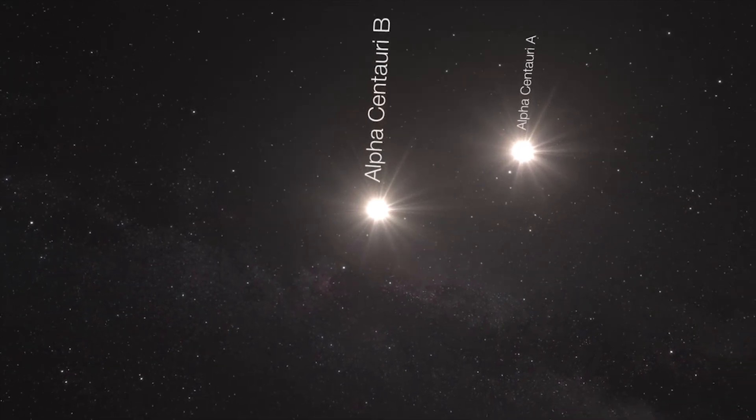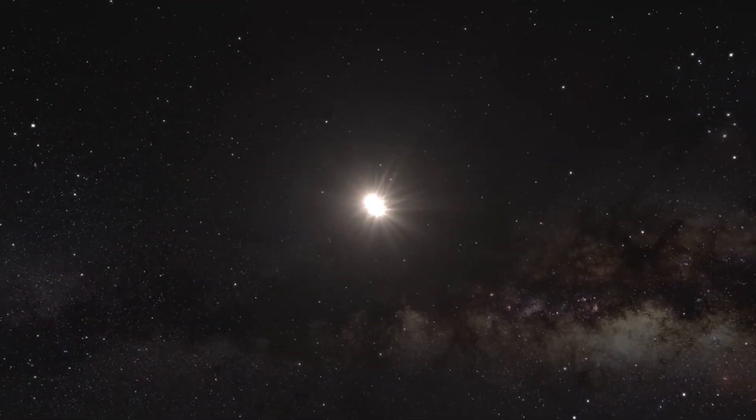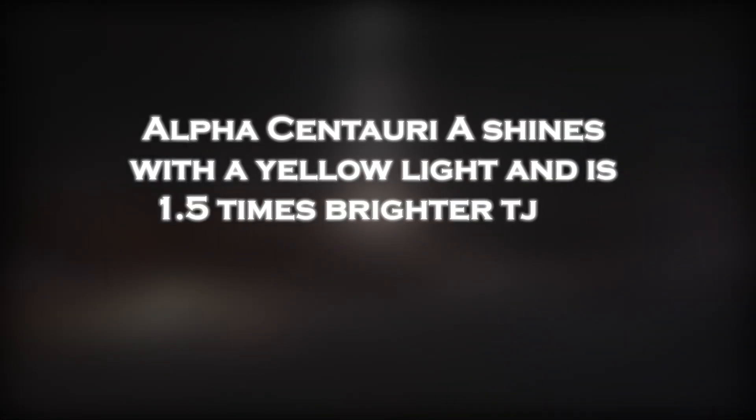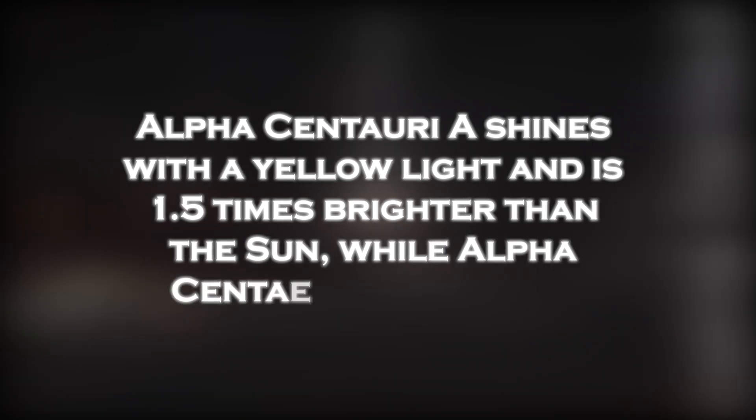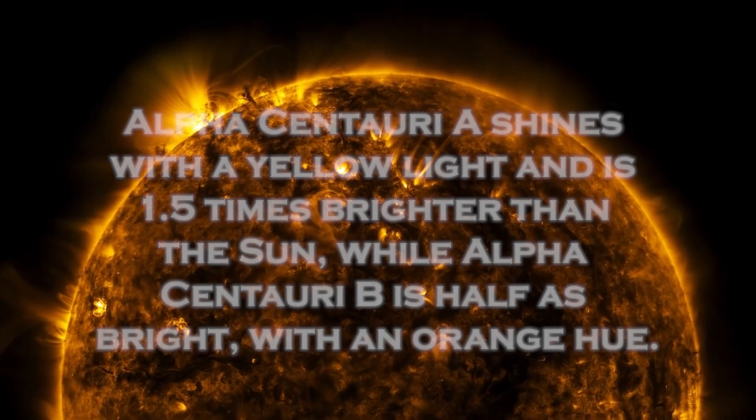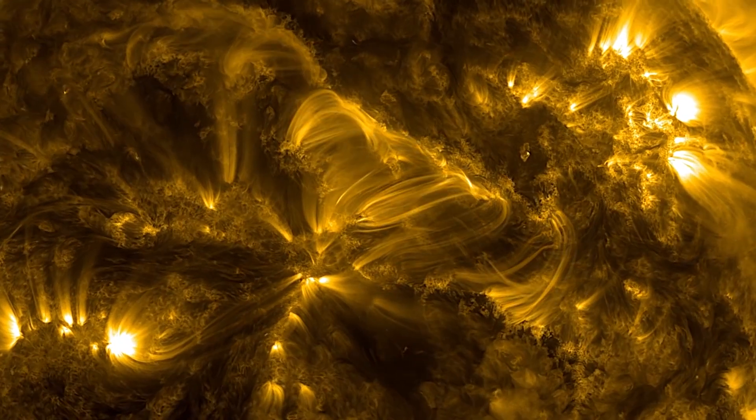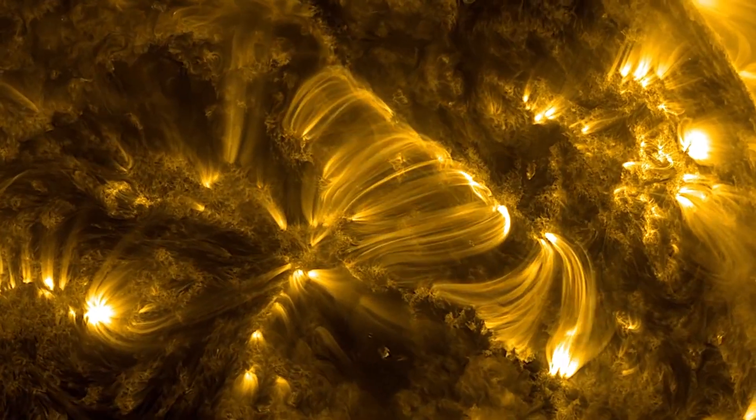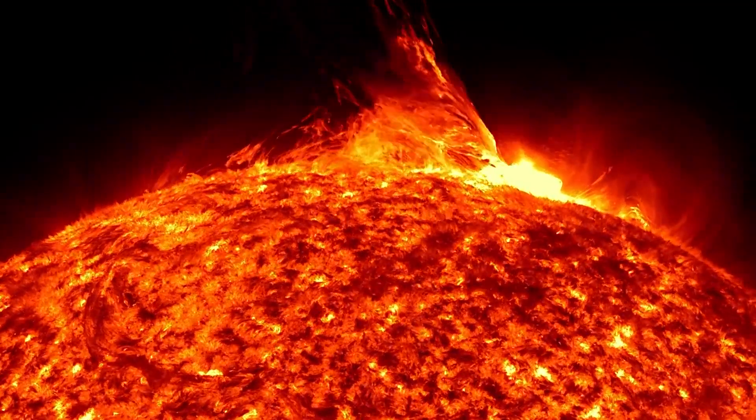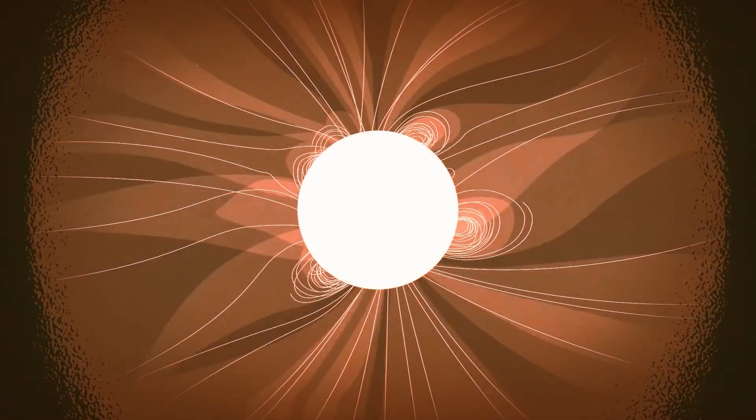Alpha Centauri A and B, the two stellar companions, are relatively close to each other and are quite similar to the Sun. Alpha Centauri A shines with a yellow light and is 1.5 times brighter than the Sun, while Alpha Centauri B is half as bright with an orange hue. Alpha Centauri A is slightly larger than our Sun, while Alpha Centauri B is smaller, so our Sun fits exactly between them in size. But where did the signal between these two stars come from?